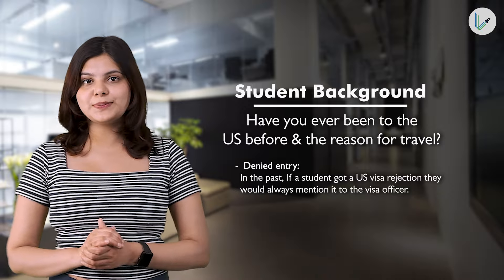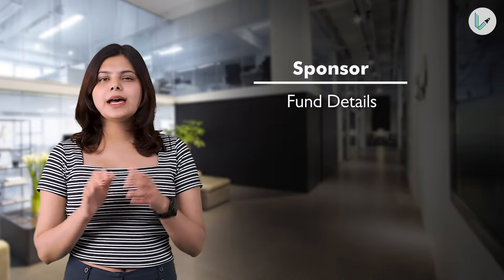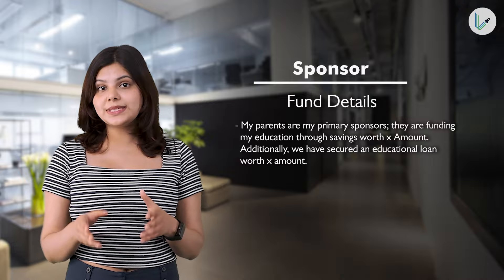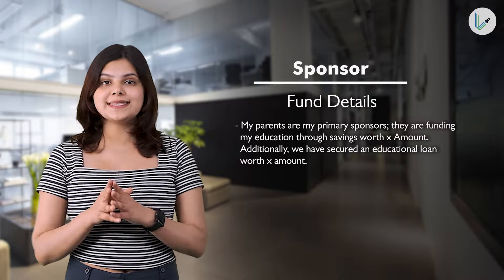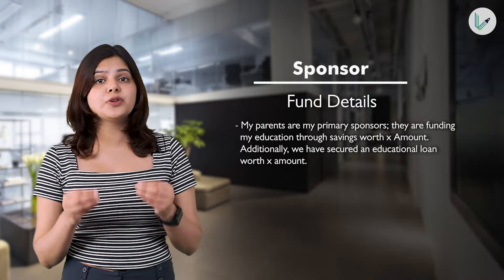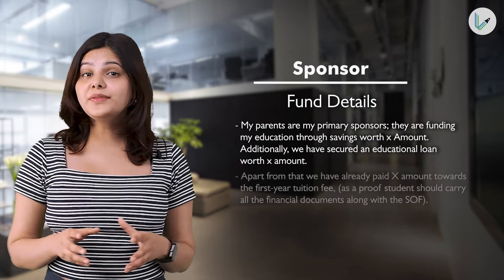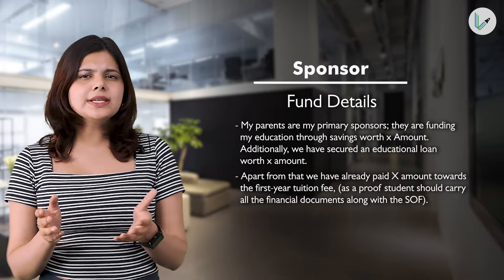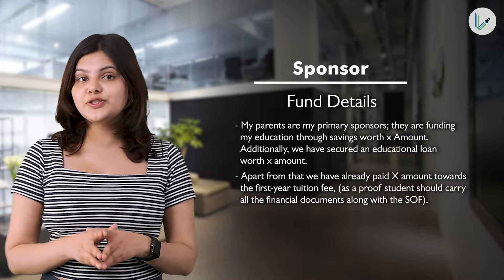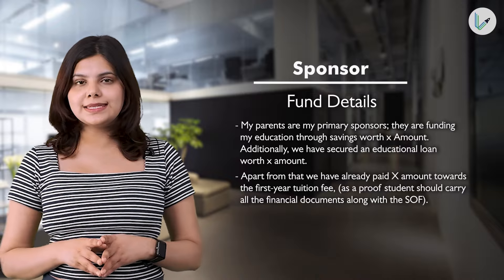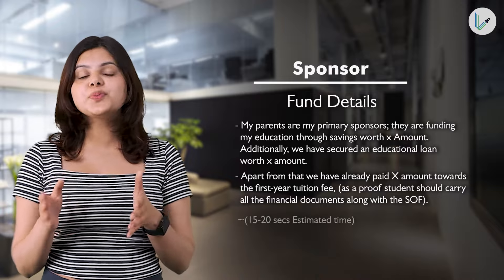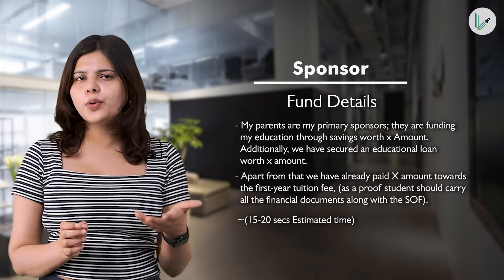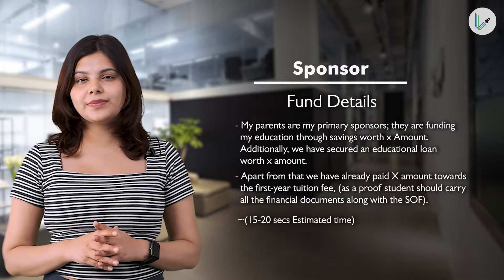Regarding denied entry in the past, if a student got a U.S. visa rejection, they should always mention it to the visa officer. For sponsor and fund details, the ideal answer is: 'My parents are my primary sponsors. They are funding my education through savings worth X amount. Additionally, we have secured an educational loan worth X amount. Apart from that, we have already paid X amount towards the first year tuition fee.' Students should carry all financial documents and the statement of finances. The answer should be within 15 to 20 seconds.